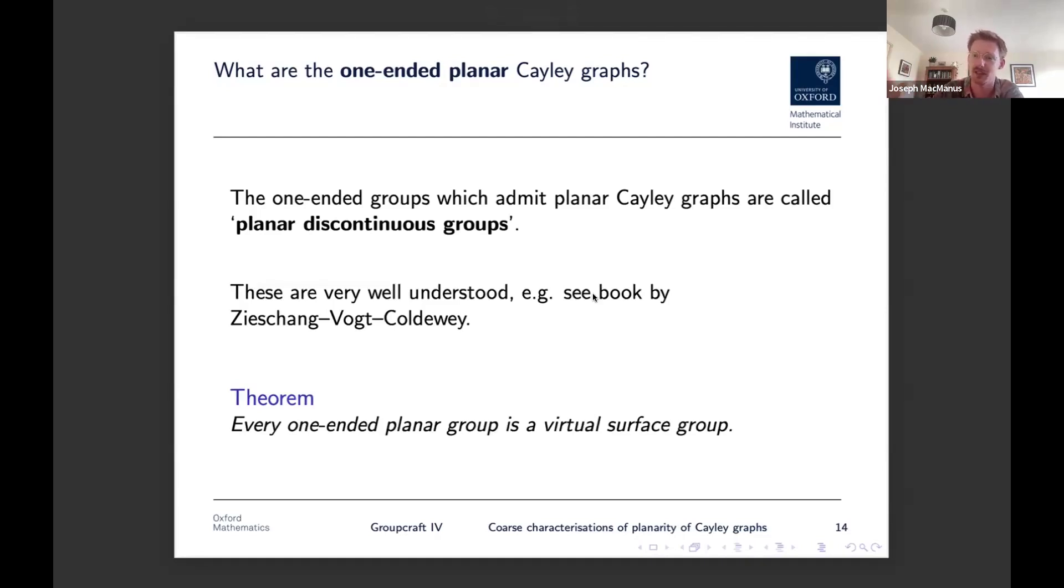Anyway, the main thing that I want you to think about for one-ended planar Cayley graphs is that they are all virtually surface groups. So they all have some finite index subgroup which is a fundamental group of some closed surface. And that's the only thing that's really important right now.